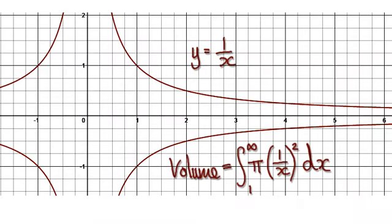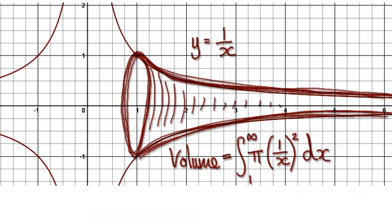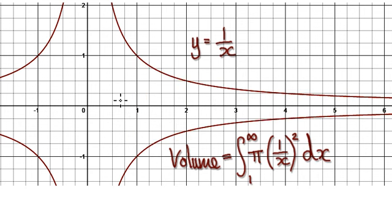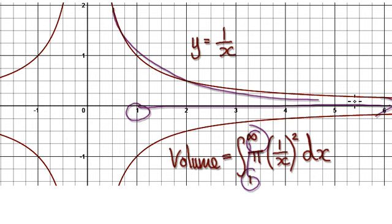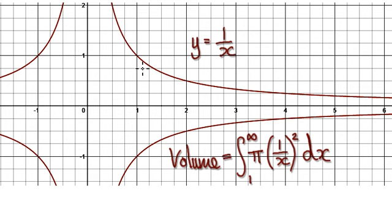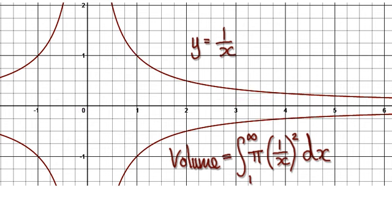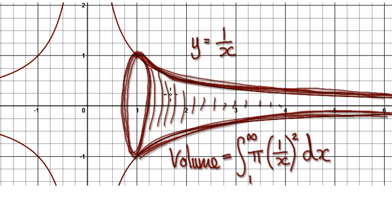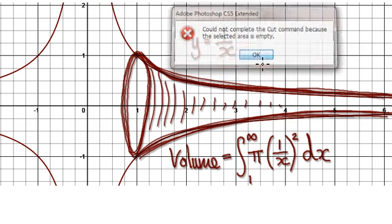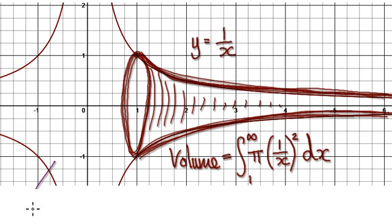Okay, let's give you guys some practice. Work out the volume of this 3D solid — from 1 to infinity. This is a graph of 1 over x. We're going to revolve it 360 degrees along the x-axis, so you're going to trace out this 3D solid. Press pause and have a go.